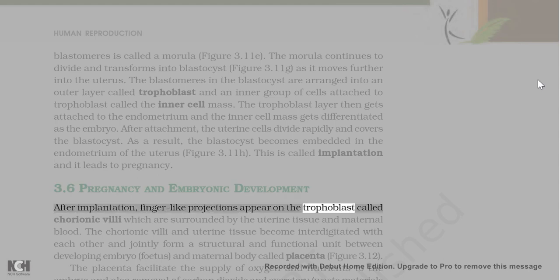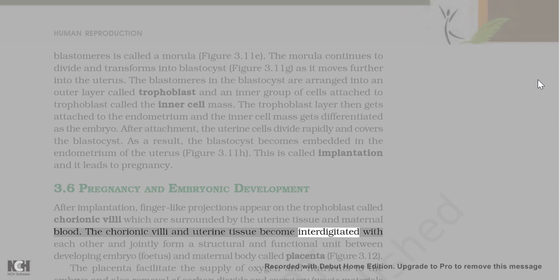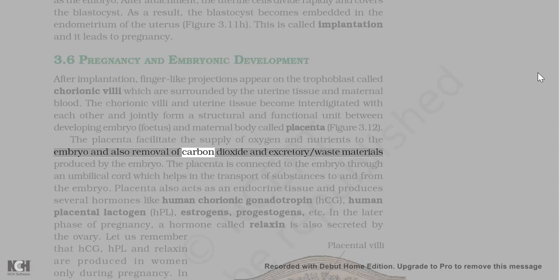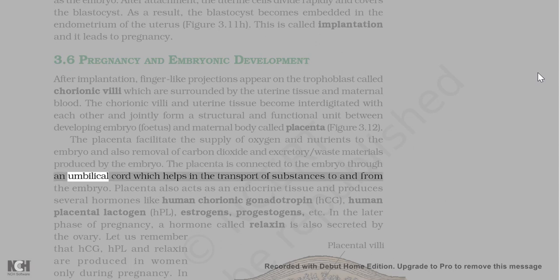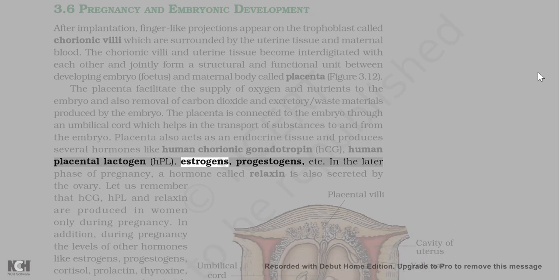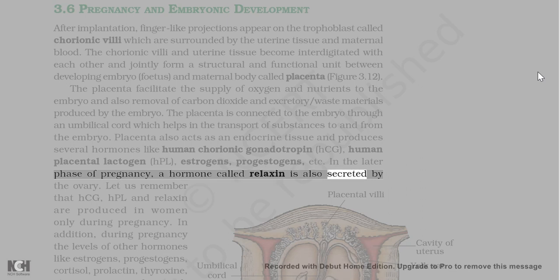After implantation, finger-like projections appear on the trophoblast called chorionic villi, which are surrounded by the uterine tissue and maternal blood. The chorionic villi and uterine tissue become interdigitated with each other and jointly form a structural and functional unit between the developing embryo (foetus) and the maternal body called placenta. The placenta facilitates the supply of oxygen and nutrients to the embryo and also removal of carbon dioxide and excretory waste materials produced by the embryo. The placenta is connected to the embryo through an umbilical cord. The placenta also acts as an endocrine tissue and produces several hormones like human chorionic gonadotropin (HCG), human placental lactogen (HPL), estrogens, progestogens, etc. In the later phase of pregnancy, a hormone called relaxin is also secreted by the ovary.